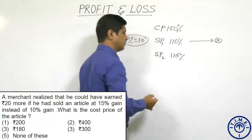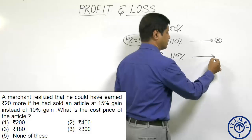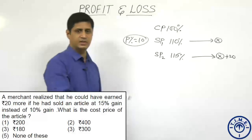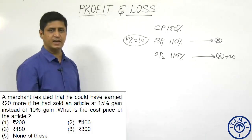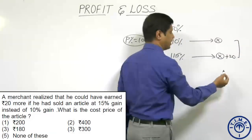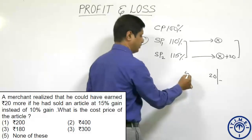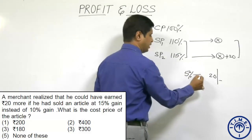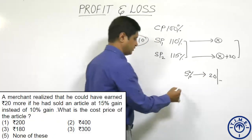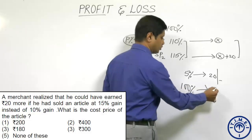The second selling price is 115 percent of its cost price. The 115 percent value is ₹20 more than the previous value. The previous selling price is X, and the new selling price is X plus 20. The difference in these two prices is ₹20 and the difference in percentage is 5 percent. The 5 percent value is equal to ₹20. To find the cost price, cost price is 100 percent, so 100 percent is equal to question mark.